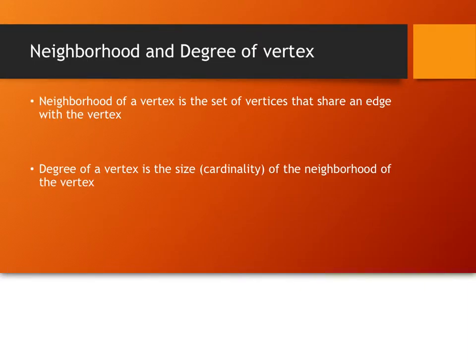We're going to focus on the neighborhood and the degree of a vertex. The neighborhood is basically the set of all vertices which are connected by an edge to the vertex in question. So the neighborhood of vertex 1 is all vertices connected by an edge to vertex 1. Once we've figured out what the neighborhood is, the degree of the vertex is just the size of the neighborhood — the cardinality of the neighborhood.